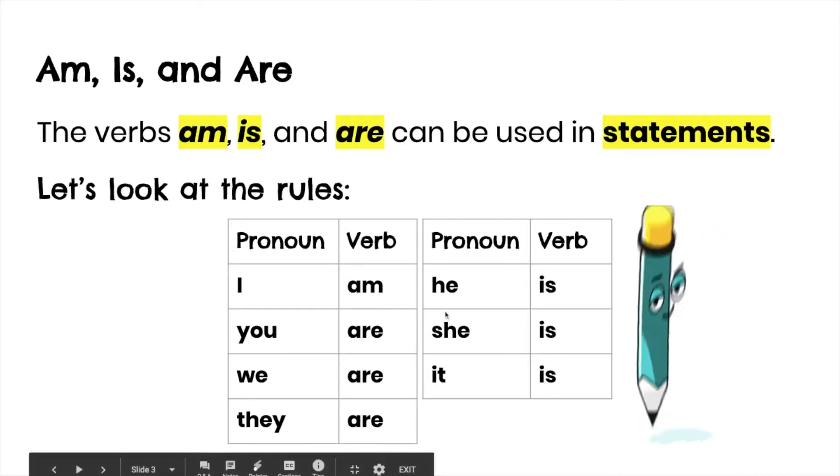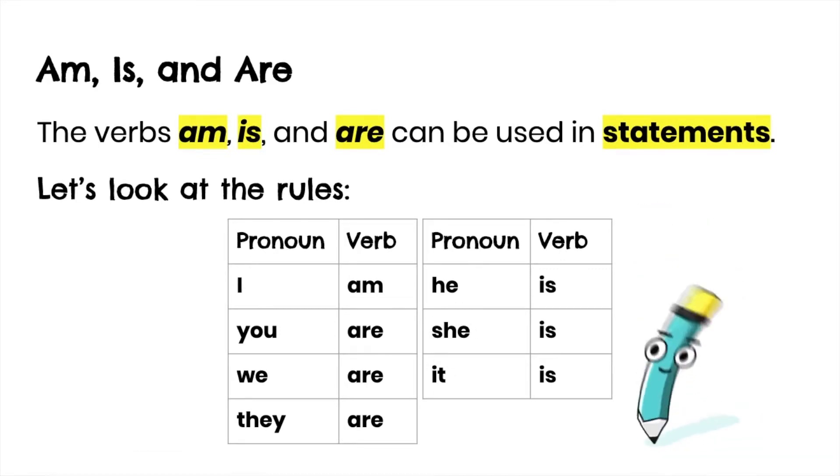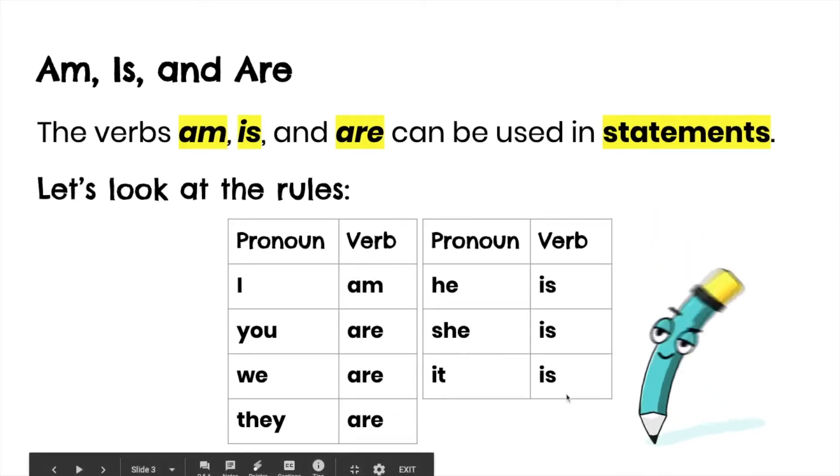When we use the pronouns he, she, and it, we use the verb is. He is, she is, it is.